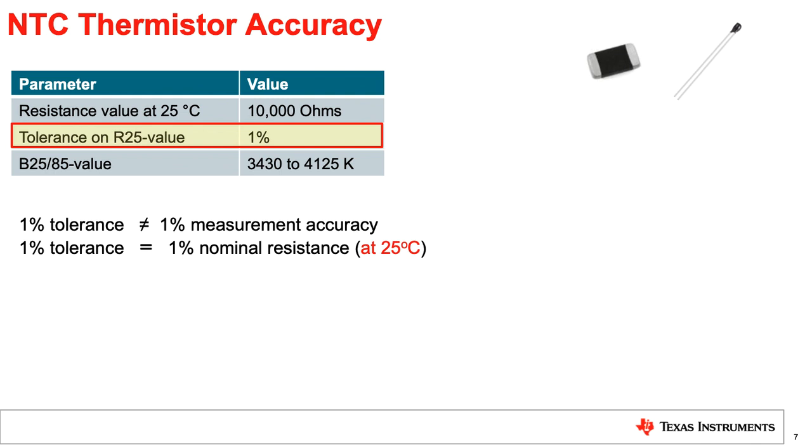Where the misconception usually comes from is how to interpret the tolerance in the NTC's data sheet. The assumption is that a 1% tolerance translates to a 1% measurement accuracy. 1% simply refers to the expected variability in resistance. So for a 10k NTC, it could be plus or minus 100 ohms. How much error that translates to will depend upon the actual temperature-resistance relationship for that thermistor. It's important to note that 1% tolerance in the resistance is only defined at 25C and could vary across temperature.